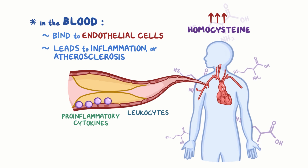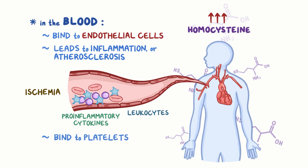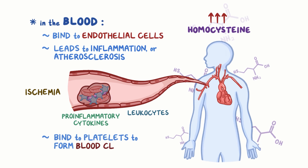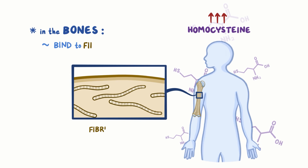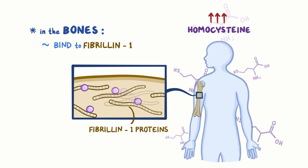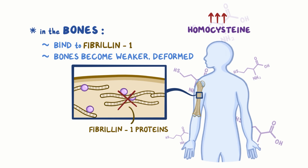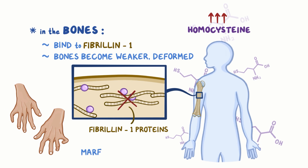Atherosclerosis narrows the arteries and could lead to ischemia of the tissue supplied by these arteries. Furthermore, homocysteine also binds to platelets and causes them to stick to one another to make blood clots. In the bones, homocysteine binds to fibrillin-1 proteins that normally provide structural support. Once homocysteine binds to these proteins, they can't bind to each other or other proteins, so the bones become weaker or deformed. These deformities are also found in Marfan syndrome, where there's a mutation in the fibrillin-1 gene.